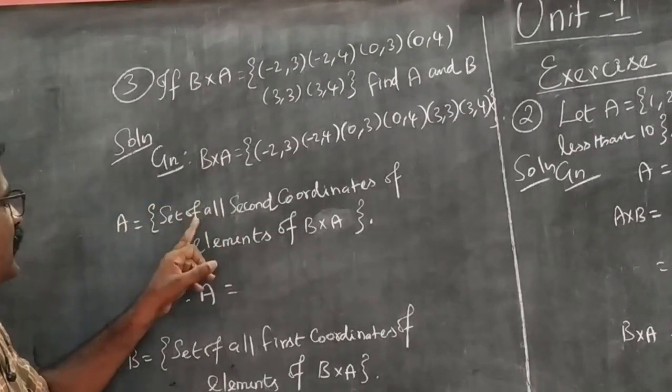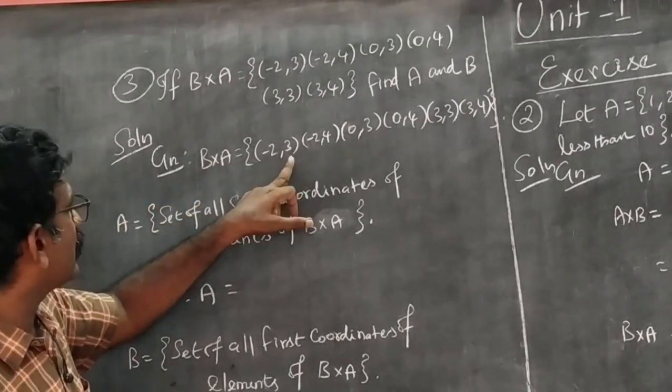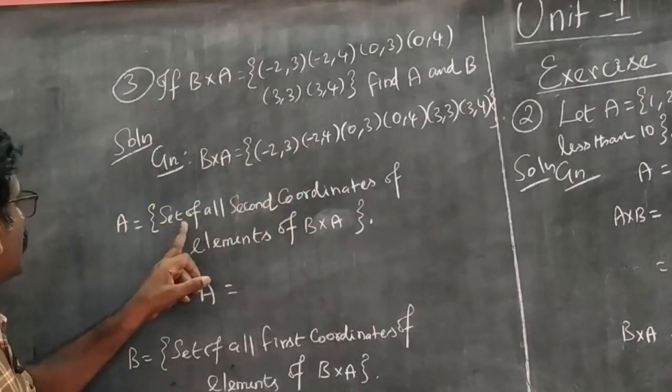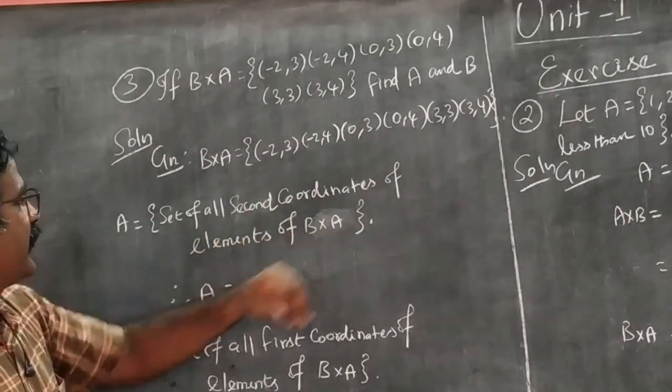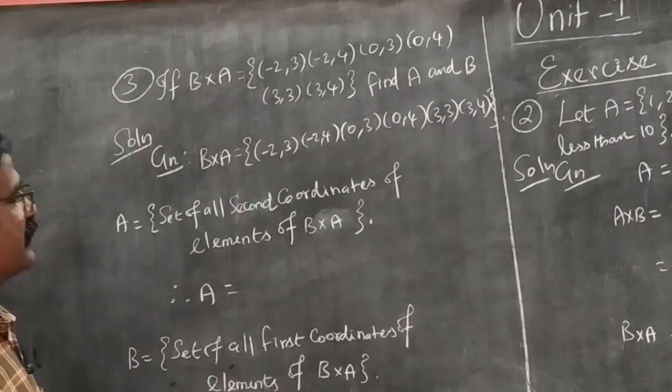So B×A is where we get the second coordinates. This is the set of all second coordinates of elements of B×A.